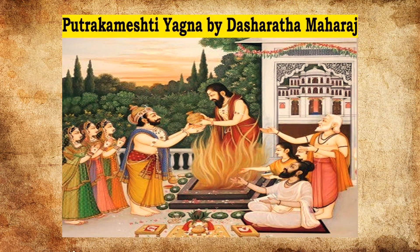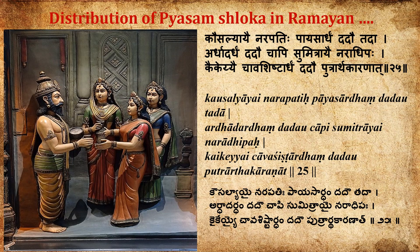As per the wish of his guru Vasistha, Dasharada performed the Putra Kamishti Yagna. At the final stage of the Yagna, Lord Agni appeared and gave a bowl of Kheer — that is Payasam, sweet rice — to the king, which was to be partaken by his three wives, the three queens: Kaushalya, Sumitra, and Kaikeyi. The Payasam offered by Agni Deva had to be distributed by King Dasharada to his three queens.